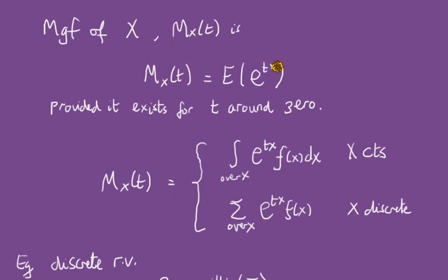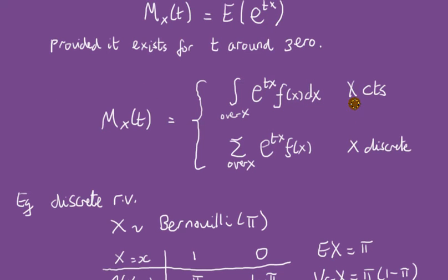Now we can talk about the definition of the MGF, pretty informally. For random variable x, the MGF is given by this function here, provided it exists for some t around zero — that's a technical bit we'll leave to the end, you don't need it for calculations at the newbie level. Specifically, when x is continuous it's given by this, and when x is discrete, it's given by this.